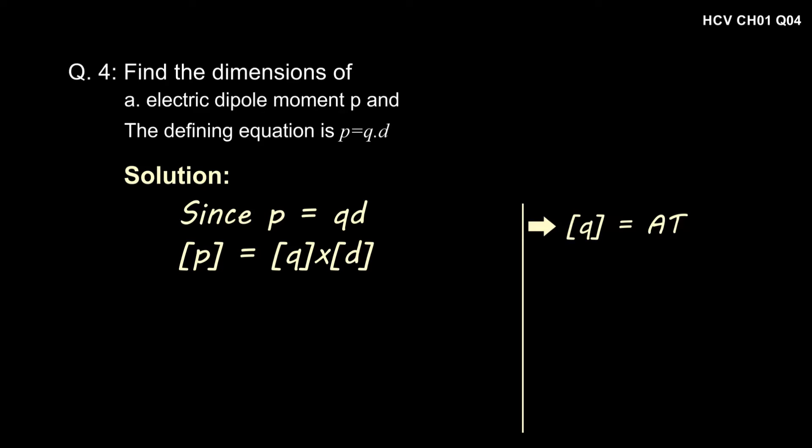Since P = Q × D, please note that in H.C. Verma book, the dimension for current is given as I, but we are using A instead of I. That should not make any difference.